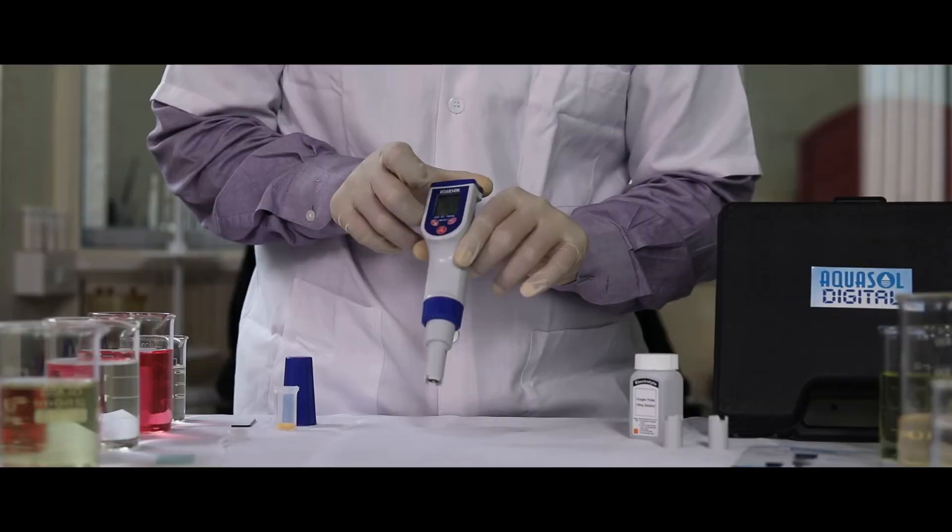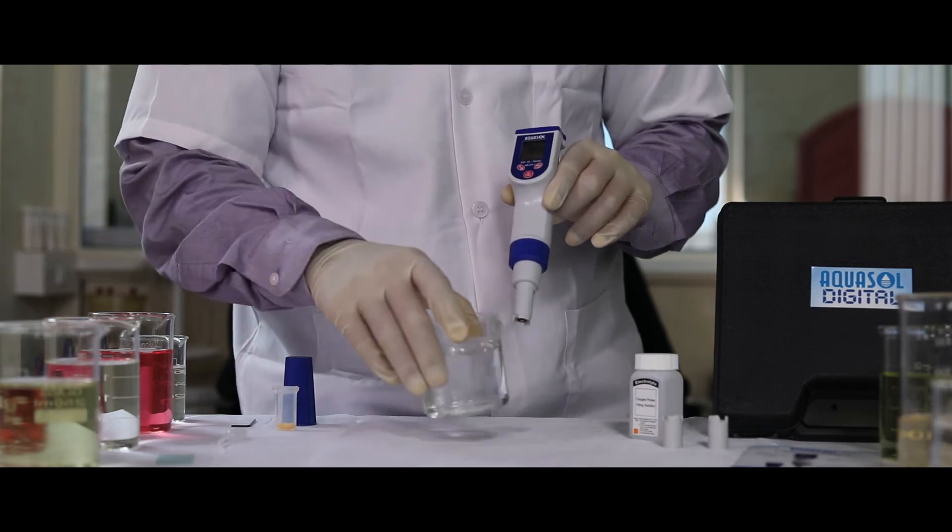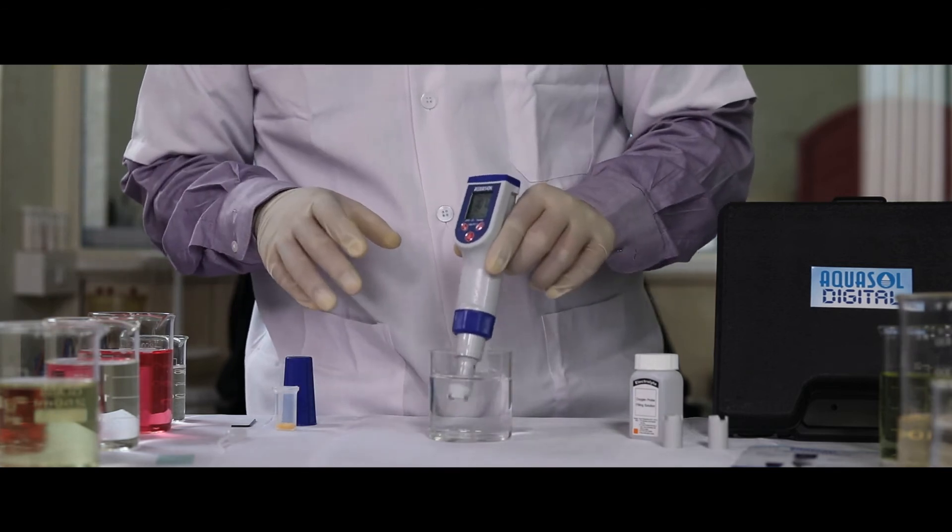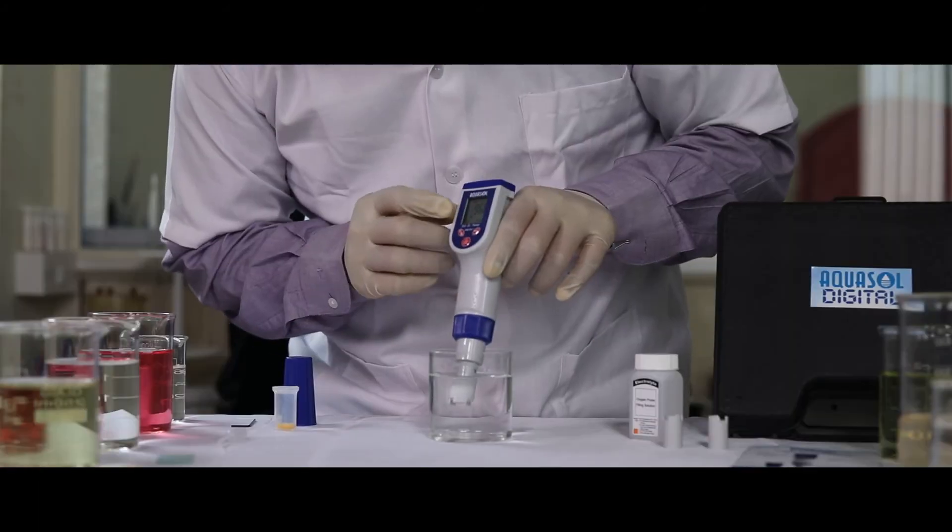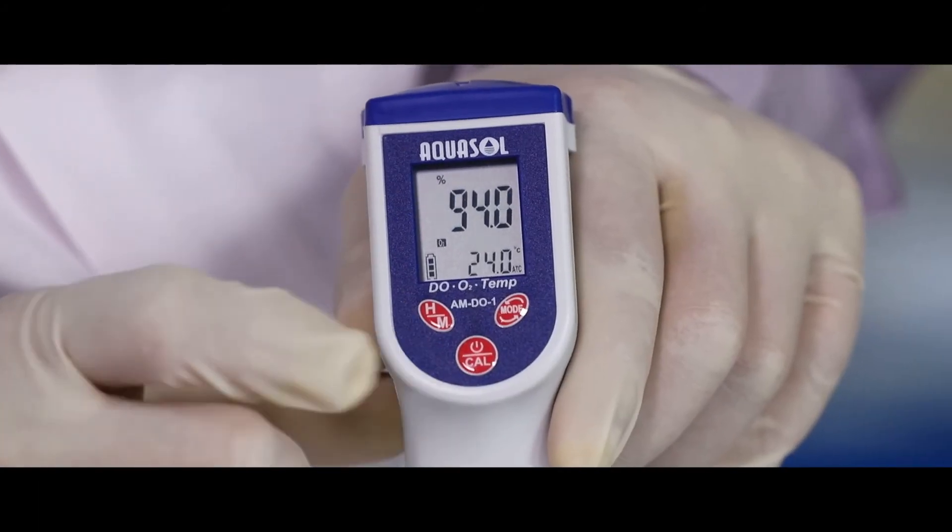Take the sample to be checked and dip the meter in the sample. Stir the electrode till the reading stabilizes. You can see the O2 value and percentage on the display.